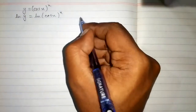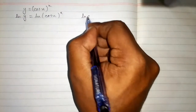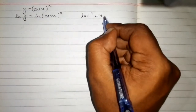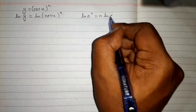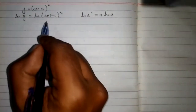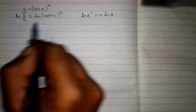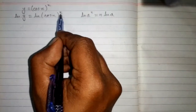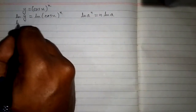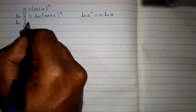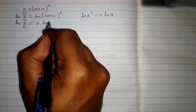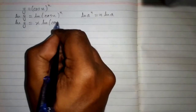Now we know that ln of a to the power n is equal to n times ln of a. We will use this property so that this power x will become the coefficient of ln cos x. So we have ln of y is equal to x times ln of cos x.